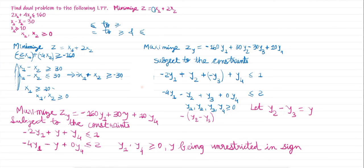So this is how you can find the dual to the given linear programming problem if you have equality constraints given in the question. If you want my handwritten notes, you can visit my website — you'll find the link in the description. Thank you.